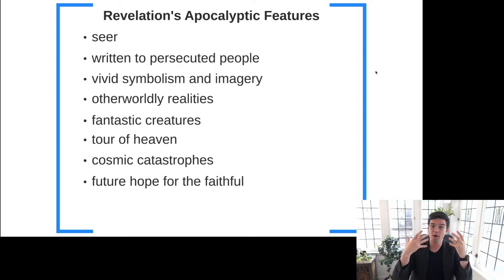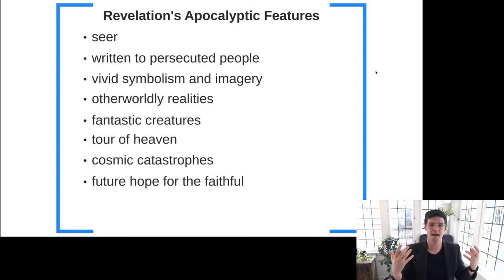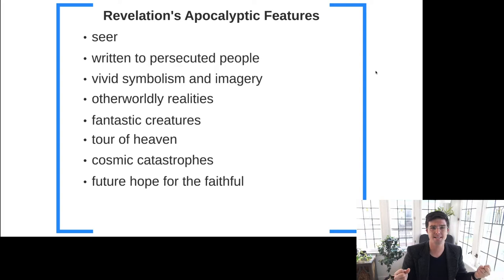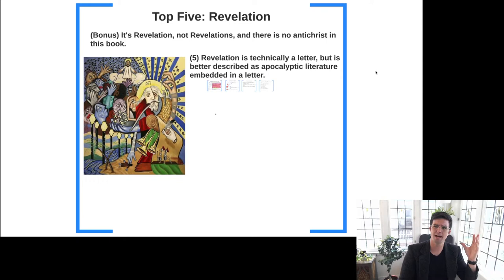As we go into Revelation itself, we see it has features of apocalyptic literature we talked about in the last video: there's a seer in Revelation; the audience addressed seems to be persecuted or suffering in some way; there are vivid visions, symbolism, and imagery with other-world realities and fantastic creatures; a tour or vision of heaven; cosmic catastrophes; and probably most importantly for the message of Revelation, a future hope for those who are faithful. One of the features of apocalyptic literature is that things in the present aren't so good, but there is hope for the future — and we get a strong sense of that in Revelation.